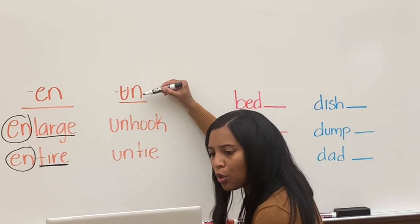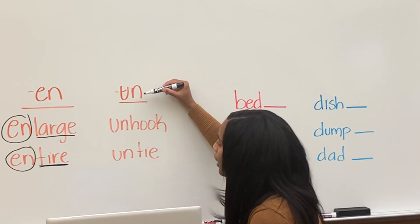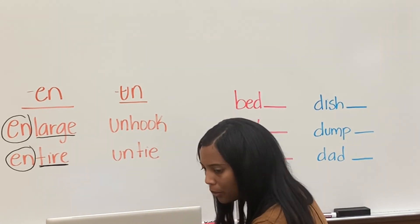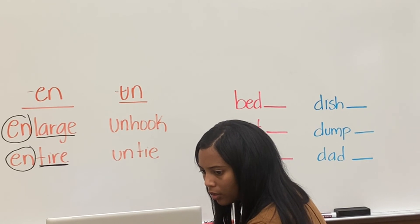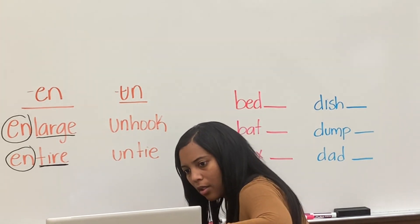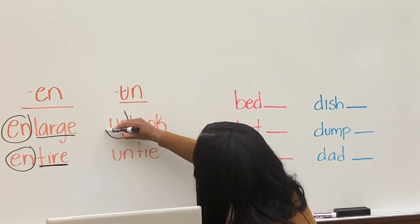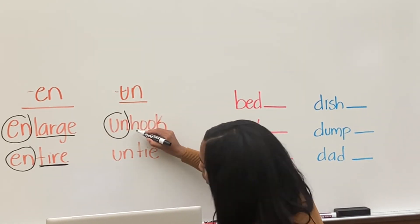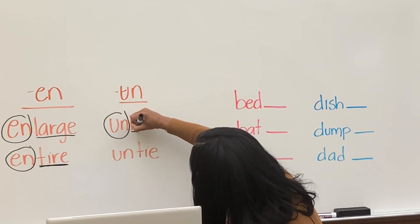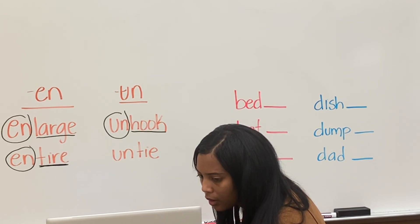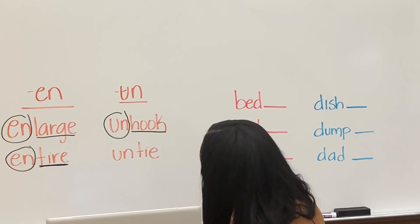Next one. Let's go to U-N, that says 'un,' like in 'unbutton.' Okay, Lyric, you would like to do this one? What do we do? Let me ask you to unmute. Circle U-N, and underline the root word. The root word is 'hook.' What's the word? Unhook. Good.